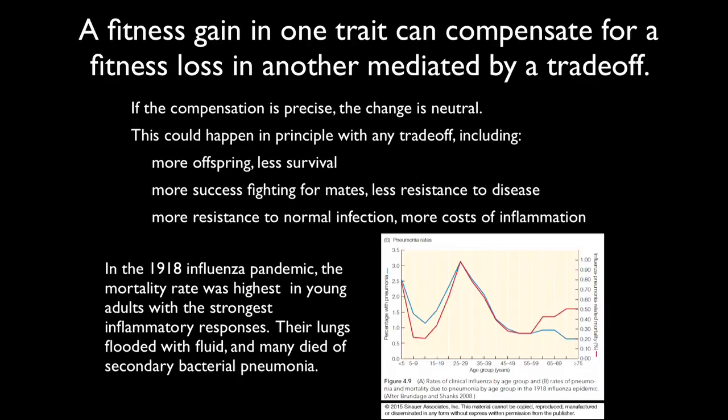We'll come back to this in later lectures. In the graph shown, we have both the percentage of people with pneumonia in blue and the influenza-related mortality rate in red. The people who died were those at their peak physiological fitness in midlife.